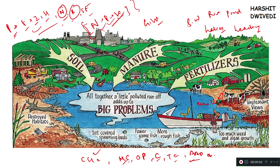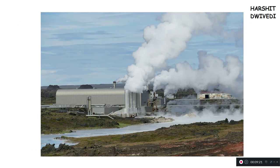Similarly, livestock throw a lot of excreta that causes pollution. In places where slaughterhouses are present, animal carcasses are exposed to water, so a lot of inorganic nutrients and organic pollutants make their way into water. This livestock and animal husbandry activity is also causing a whole lot of aquatic water pollution.